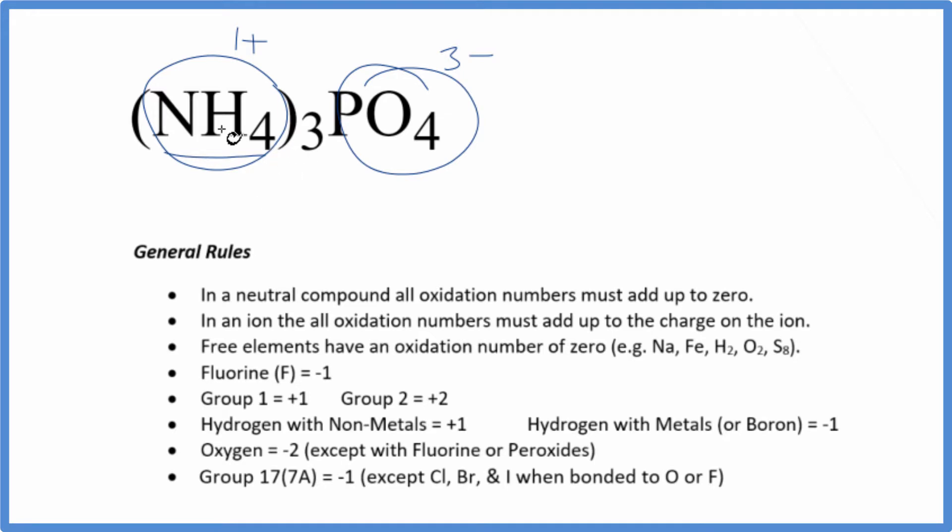Let's figure out the oxidation numbers for the nitrogen here, just within the ammonium ion, and then the phosphorus, just within the phosphate ion. So we'll start with NH₄+, the ammonium ion.